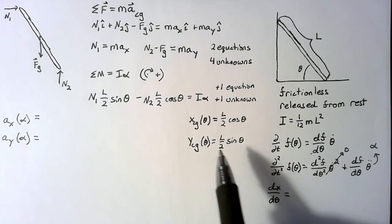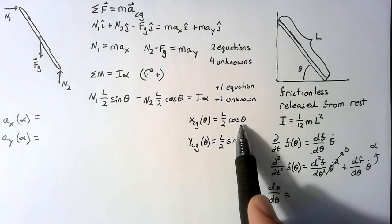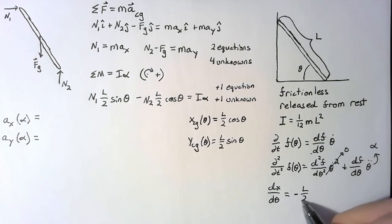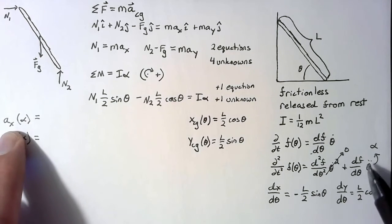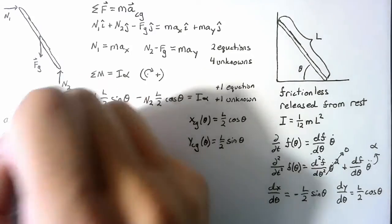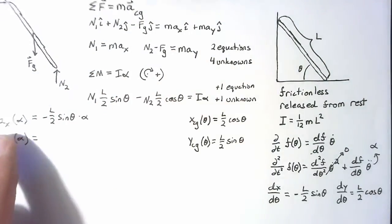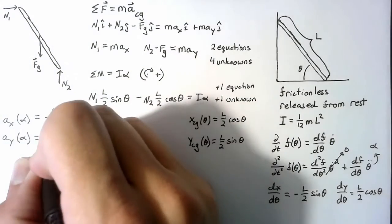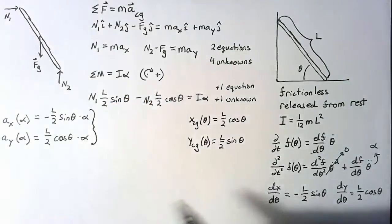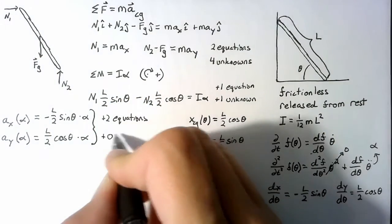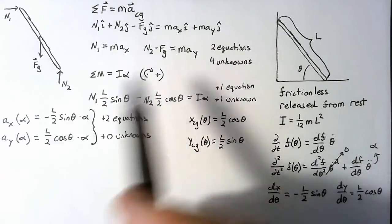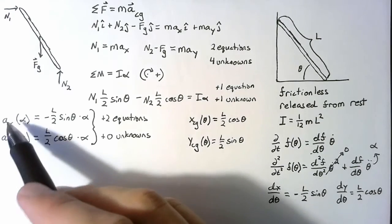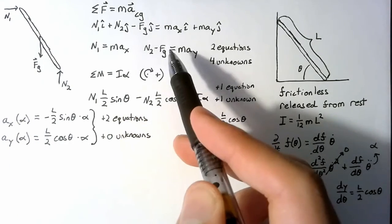So dx/dθ is the derivative of L over 2 cosine theta, which gives negative L over 2 sine theta. And dy/dθ becomes L over 2 cosine theta. Plugging in: the acceleration in x is dx/dθ times alpha, giving negative L over 2 sine theta times alpha. The acceleration in y is L over 2 cosine theta times alpha. We've added two equations without adding new unknowns, so we can now substitute ax and ay into the sum of the forces equations.